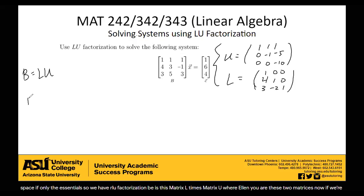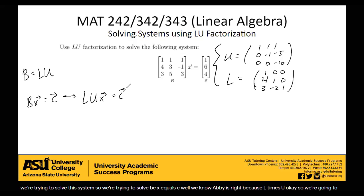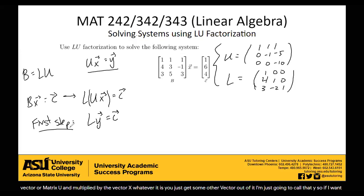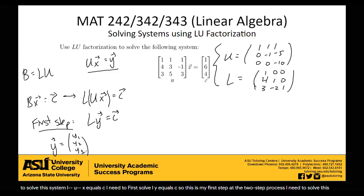Now we can use this to solve our system. We're trying to solve BX equals C. We know B is L times U, so we solve this in steps, working from outside in. U times X is really just some vector, so I'll call it Y — I set UX equal to Y. So to solve LUX equals C, I first need to solve LY equals C. This is a two-step process, and in step one I let Y equal Y1, Y2, Y3.